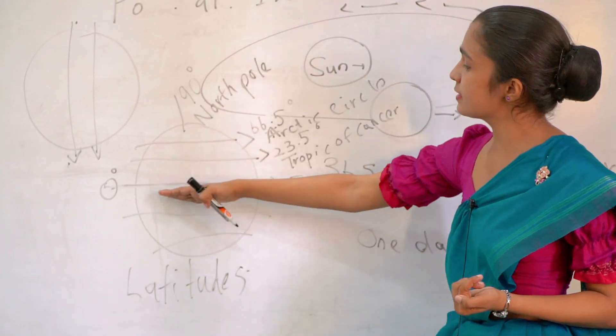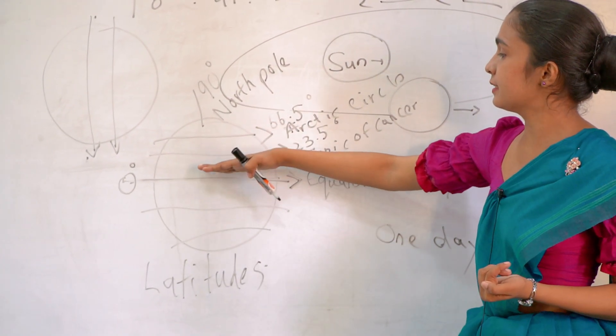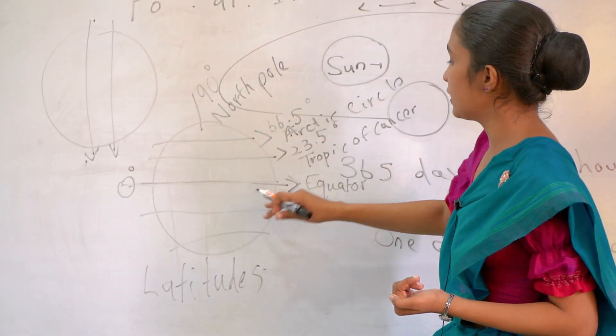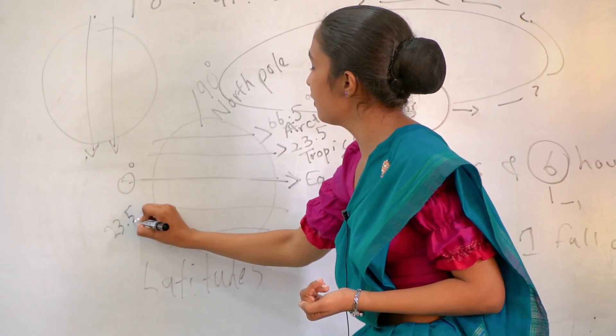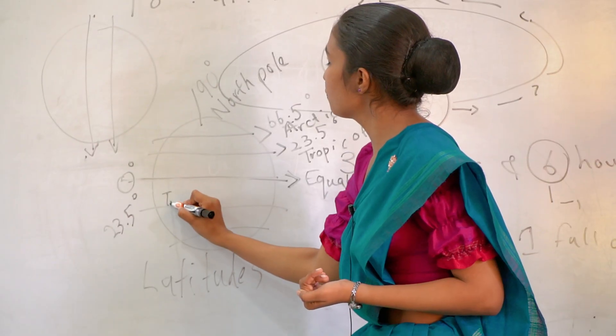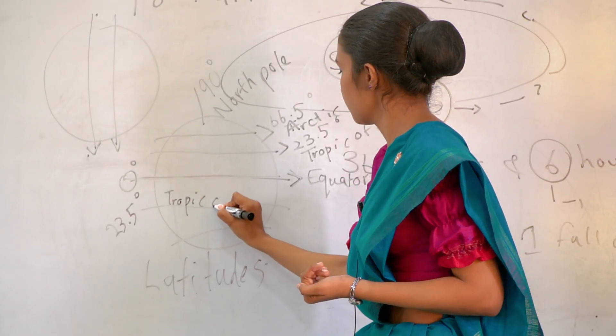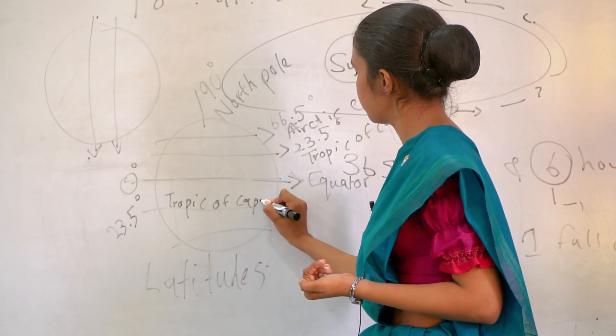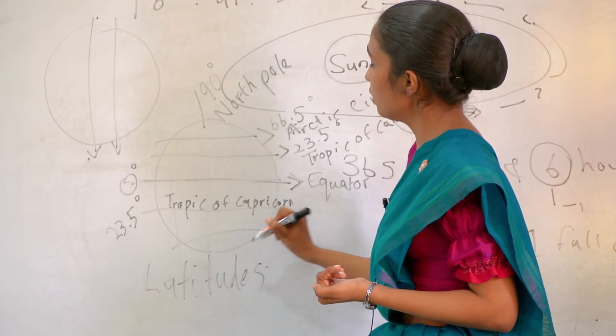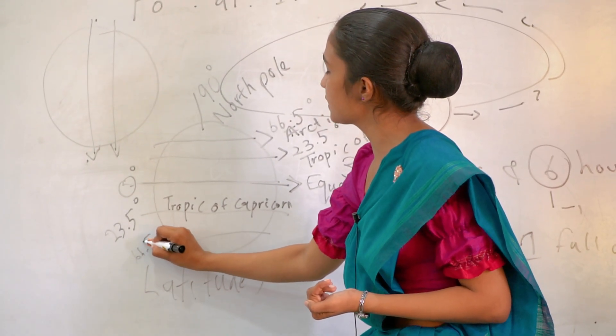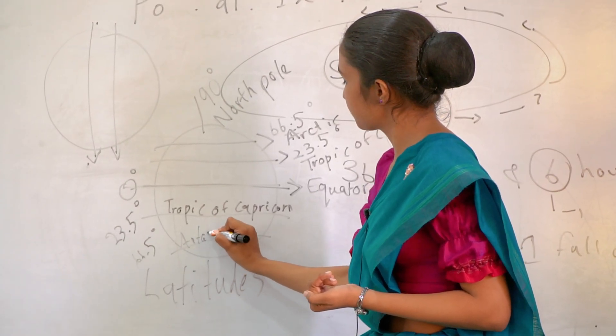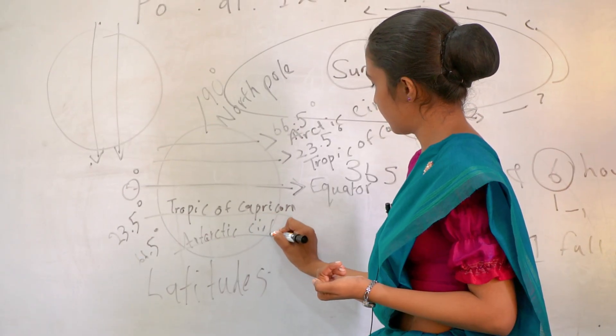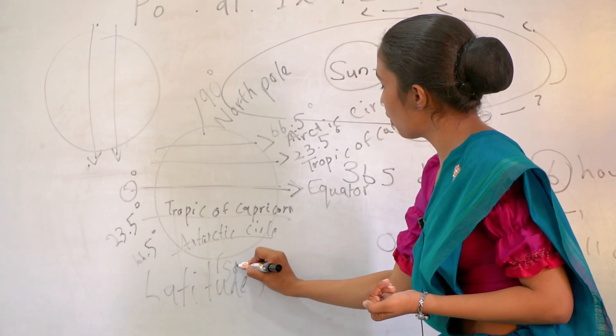Next one, this is southern hemisphere. And this is northern hemisphere. In southern hemisphere, we have 23.5 degrees Tropic of Capricorn. And also we have 66.5 degrees Antarctic circle. Last one is south pole.